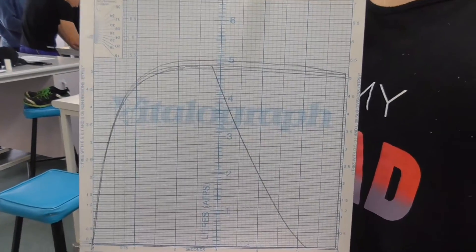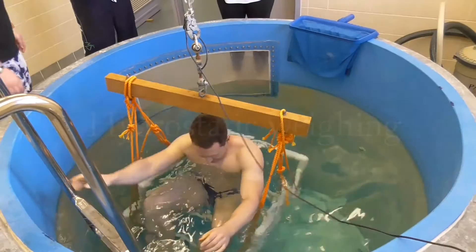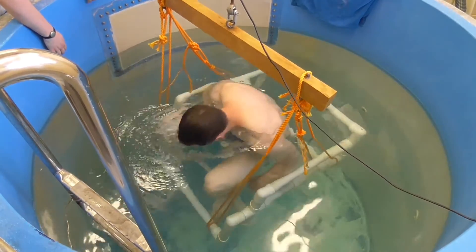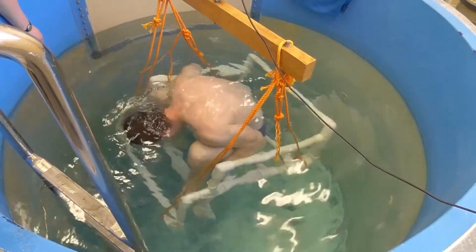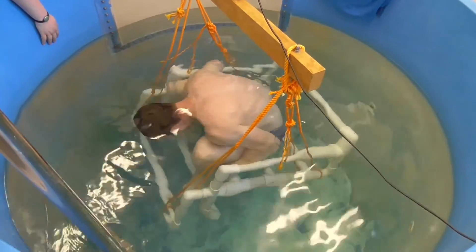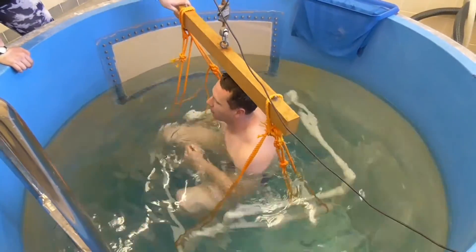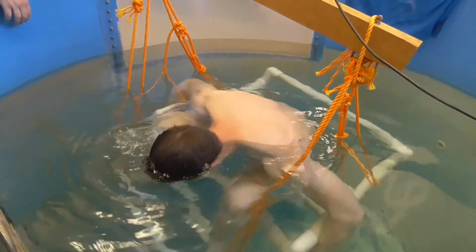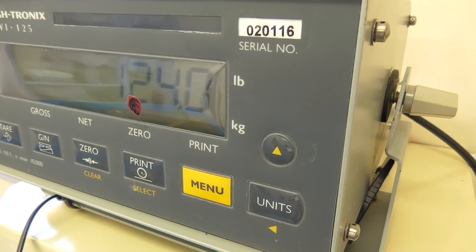Basically the way hydrostatic tests work: you hop in the pool and because fat weighs less than water, and muscle and bone are more dense than water, the more buoyant you are in this chair that's attached to a scale, the more fat you have. You have to expire every bit of air in your lungs so that's not making you more buoyant than what you actually are — it's just your fat that's making you float that little bit. This is all to calculate your body density, and from that body density you work out your body fat percentage from calculations.